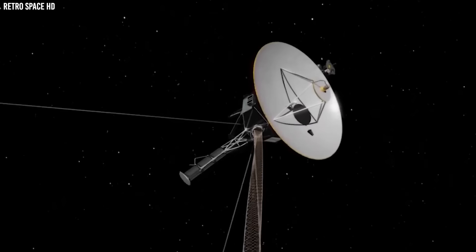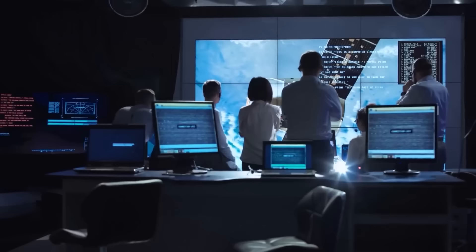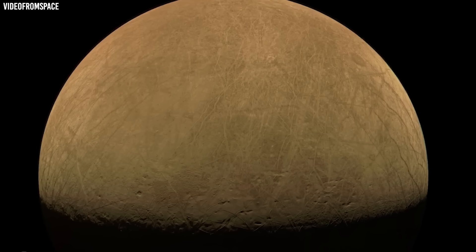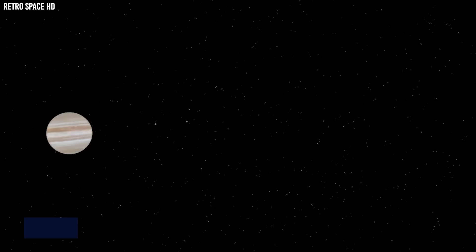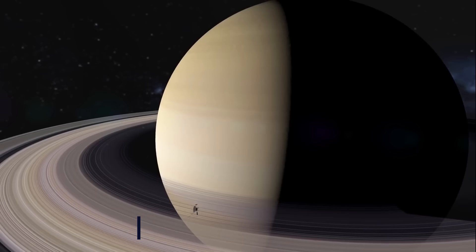Moreover, Voyager 1 captured and transmitted images of Europa, revealing a seemingly smooth surface marked by lines suggesting ice formations and hinting at the possibility of an underlying ocean. Subsequent observations and analyses indicated that Europa likely harbors a vast subsurface ocean of liquid water capable of supporting life like Earth's. In March 1979, Voyager 1 executed its closest approach to Jupiter, reaching within 174,000 miles or 280,000 kilometers of the turbulent cloud tops.